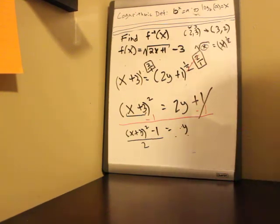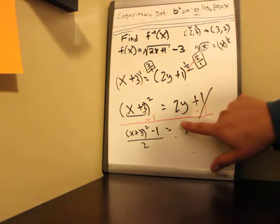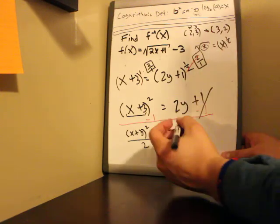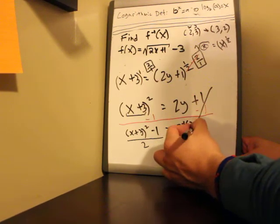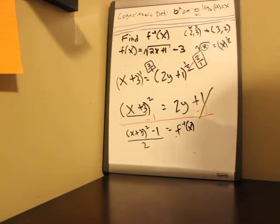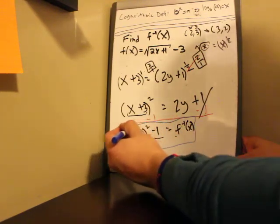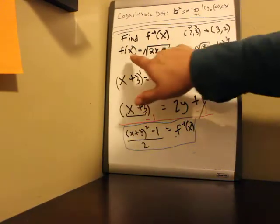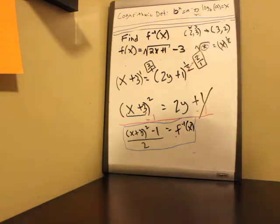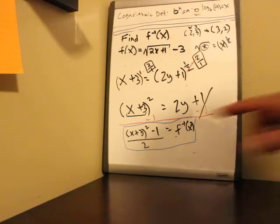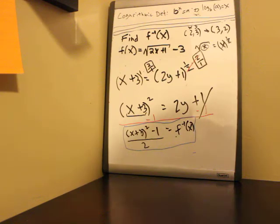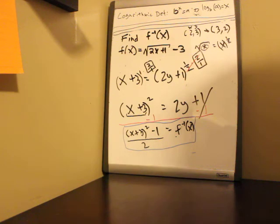And now we are done. y equals — and we have our function. We can write this as the inverse of f of x equals (x plus 3) squared minus 1, all divided by 2. And there we just found the inverse of the square root of 2x plus 1 minus 3. I hope that helped. Let me know if you still have any questions. Make sure to check out the other video — maybe both of these will help you on how to go about solving this.